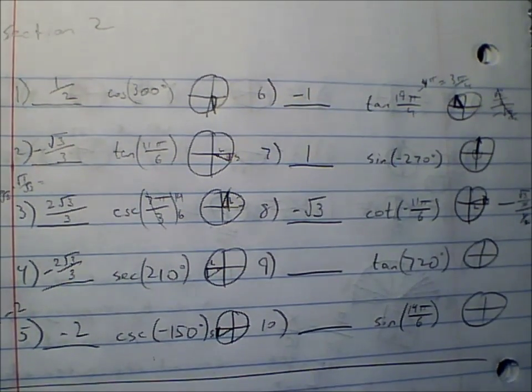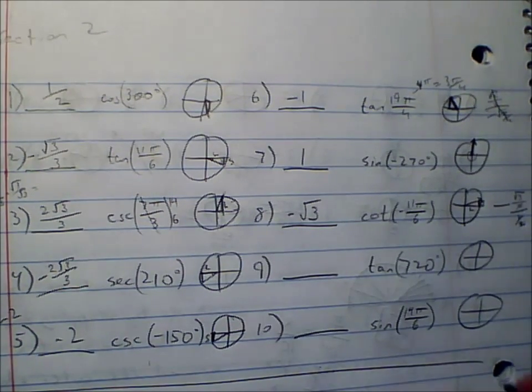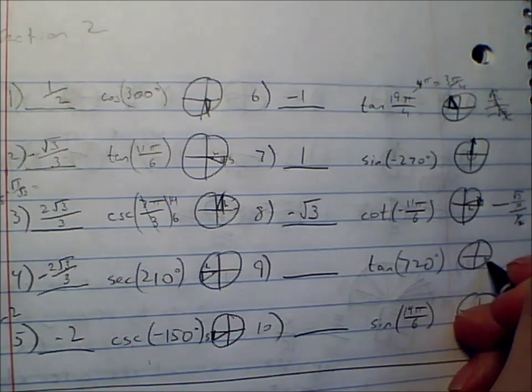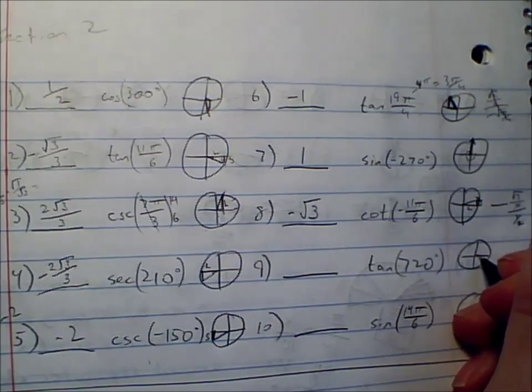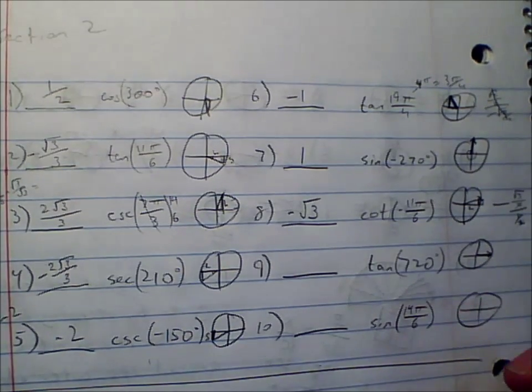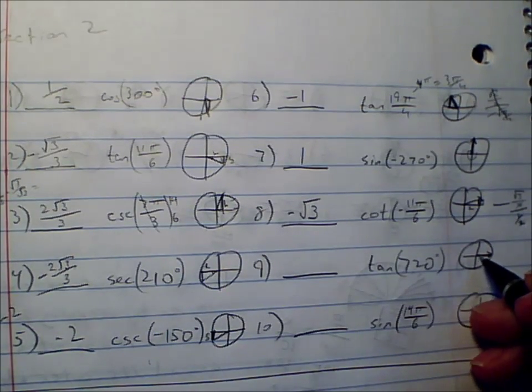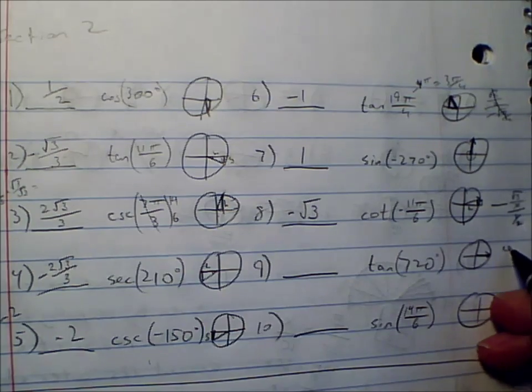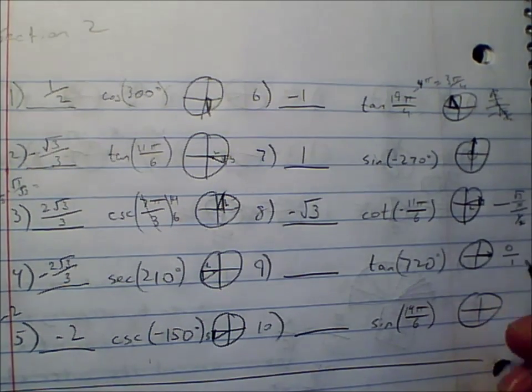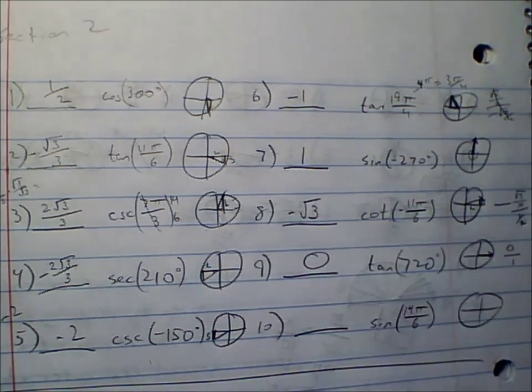For number 9, we've got tangent of 720. Let's find 720 - there's 360, make another circle, that's 720. Tangent is the y value, 0, over the x value, 1. 0 divided by 1 is 0.